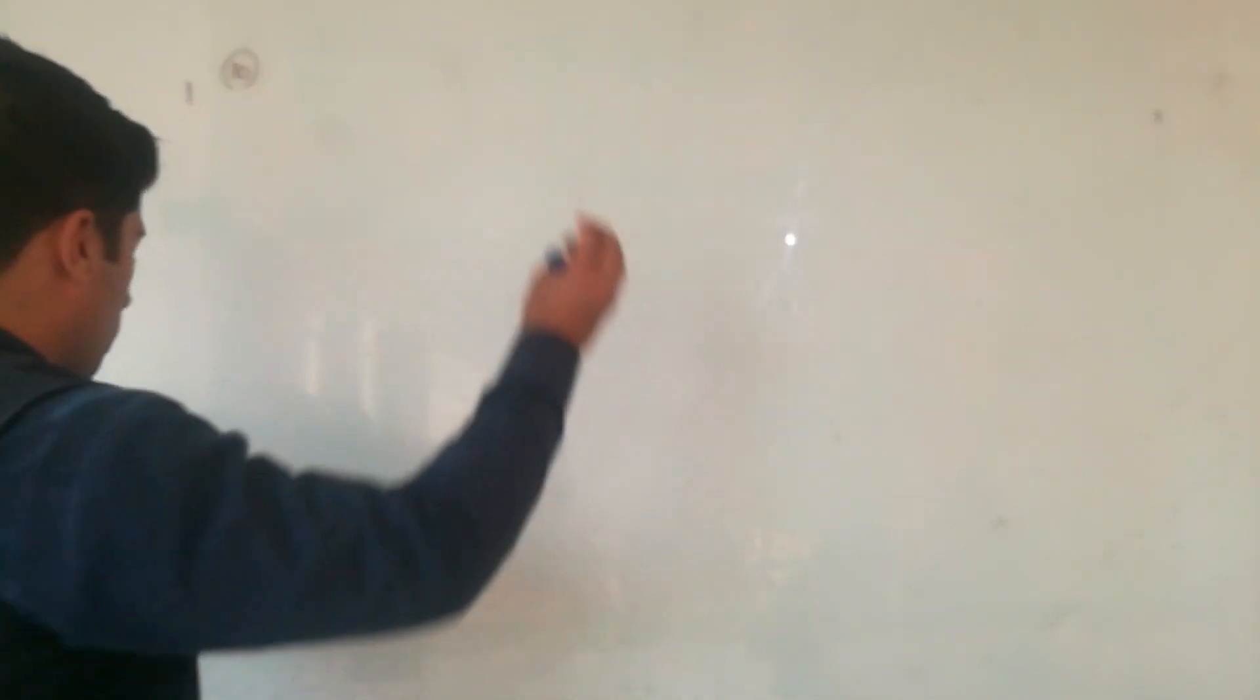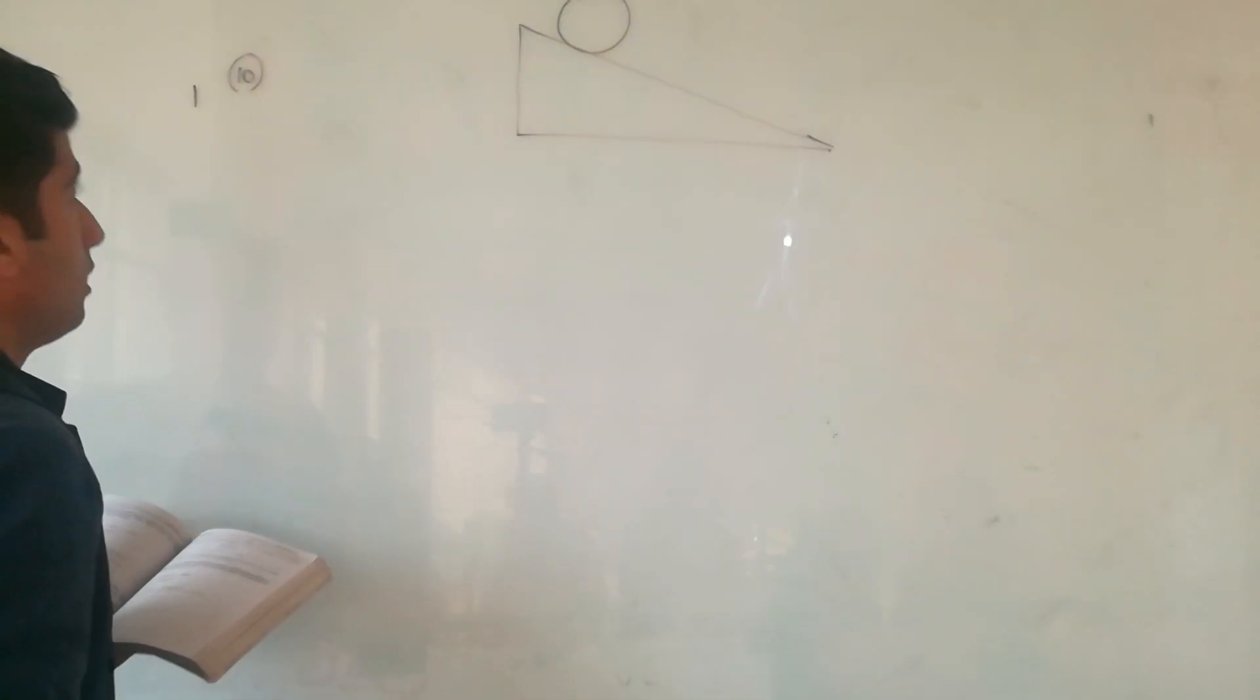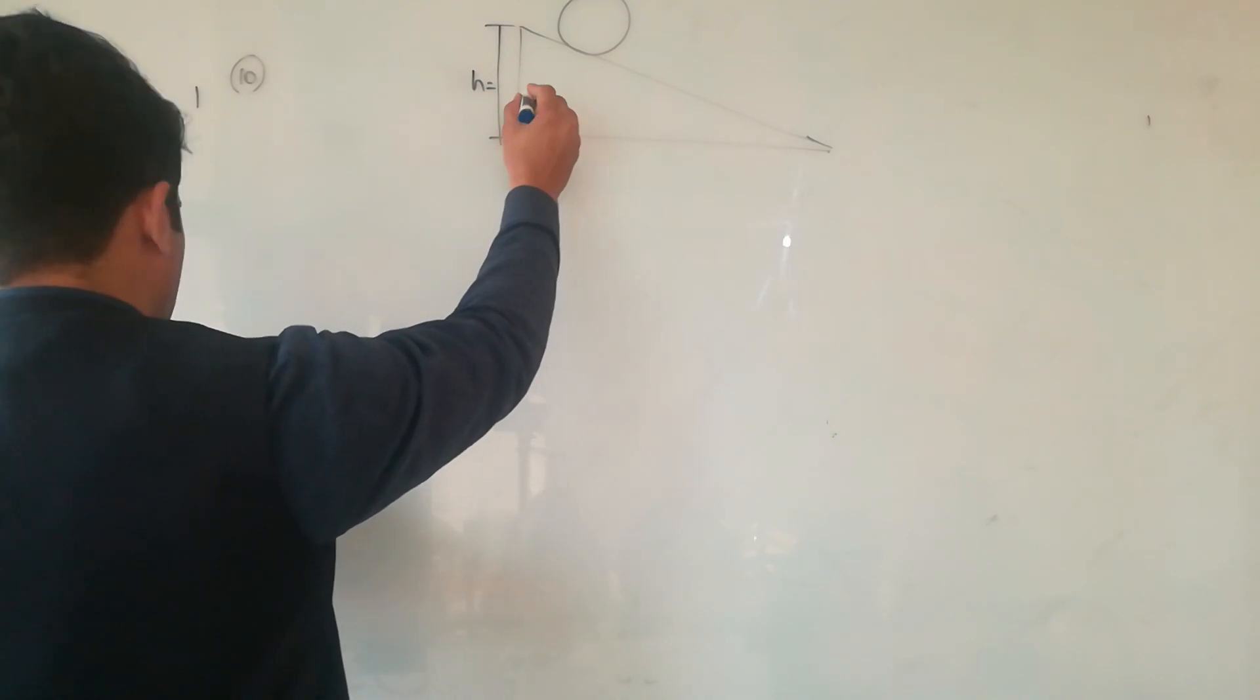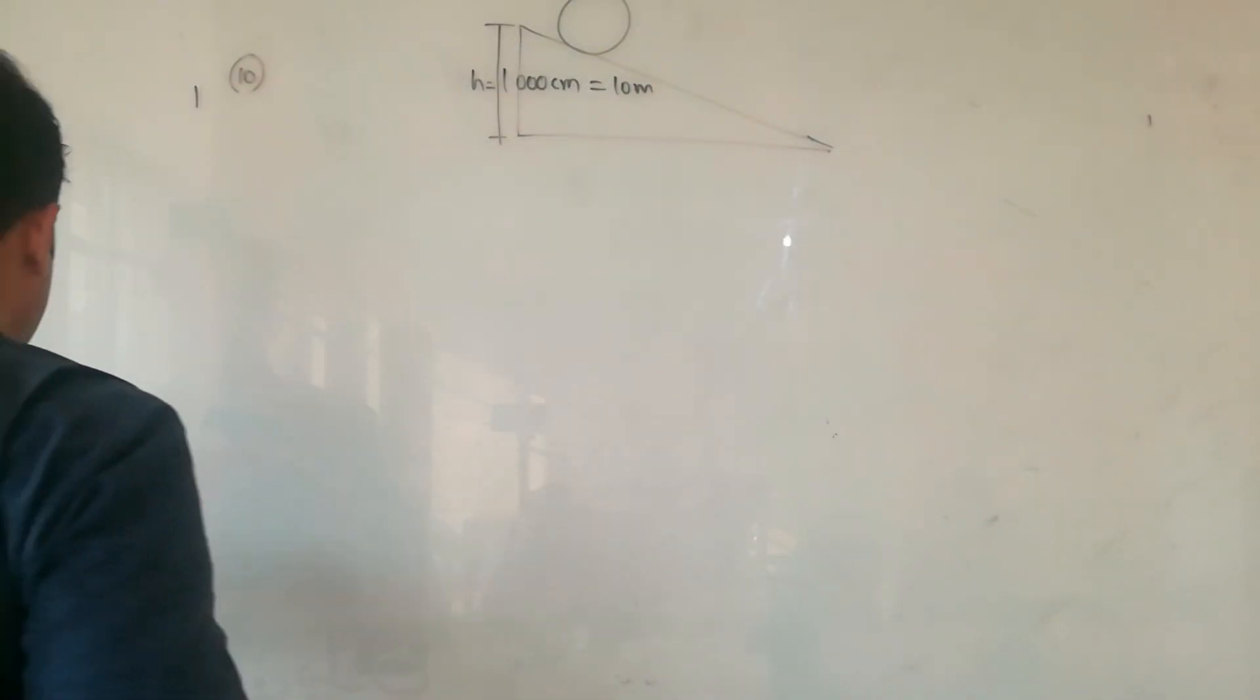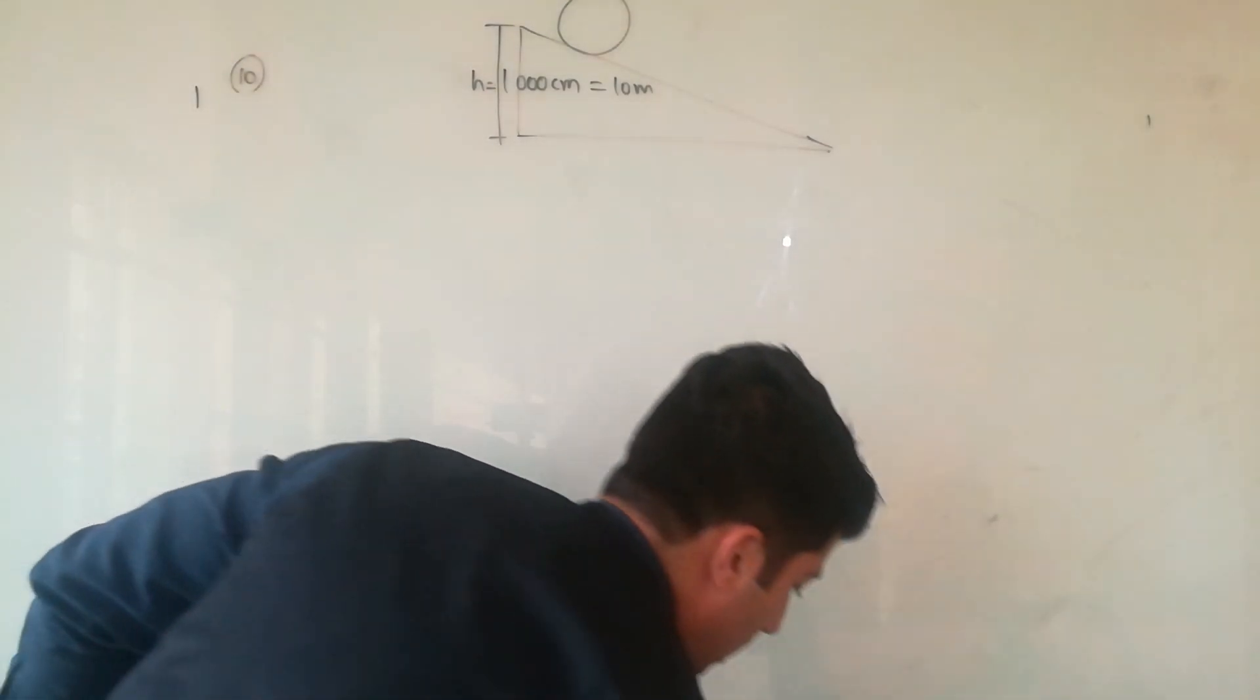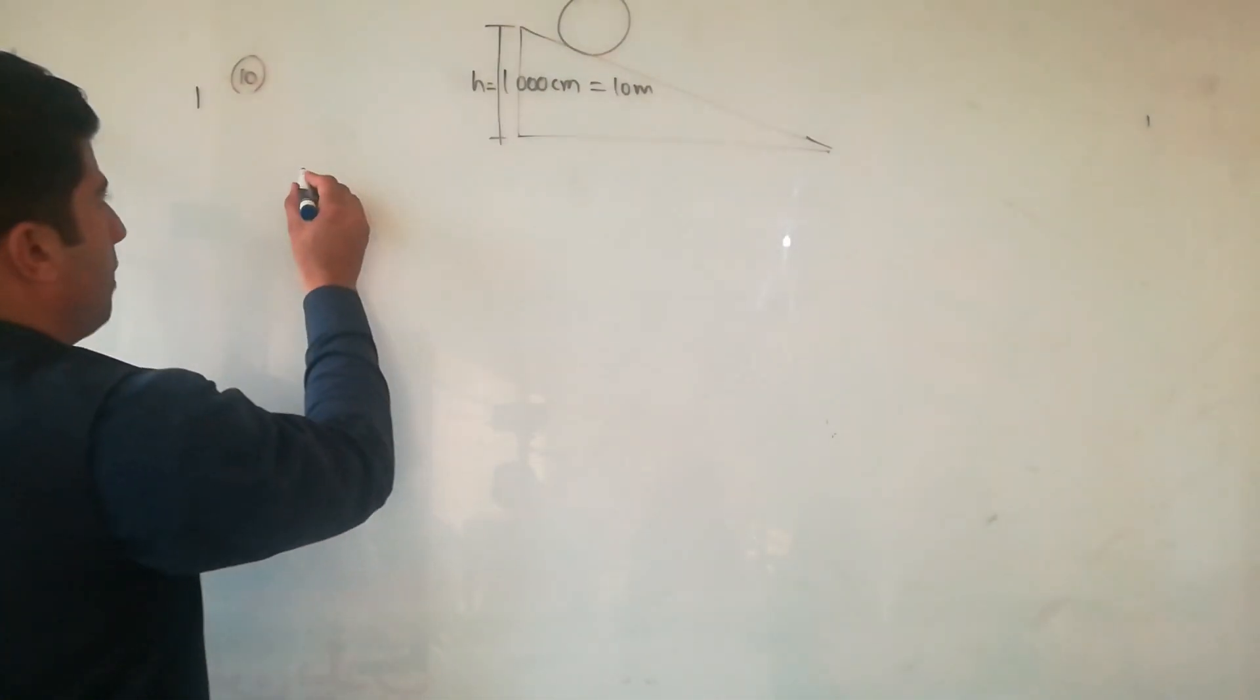Problem number 10: A disc without slipping rolls down a hill of vertical height h equals 1000 centimeter. 1000 centimeter equals 10 meter. If the disc starts from rest at the top of the hill, what is the magnitude of its velocity at the bottom?